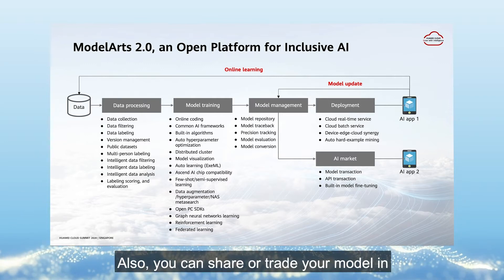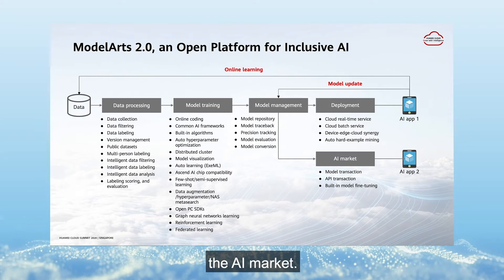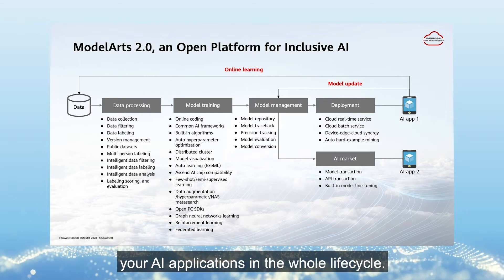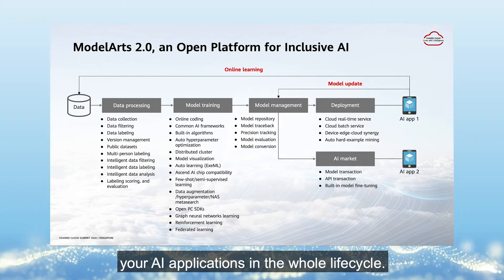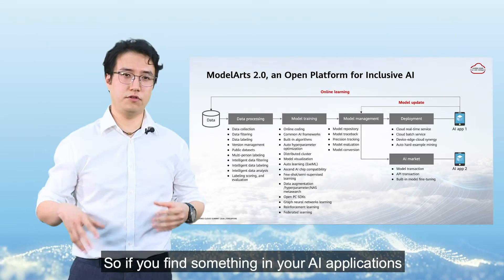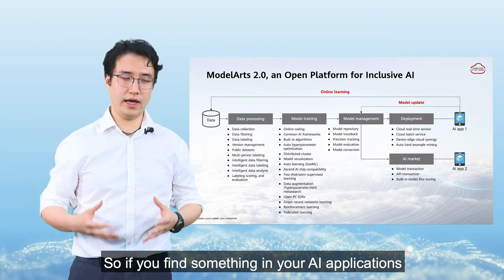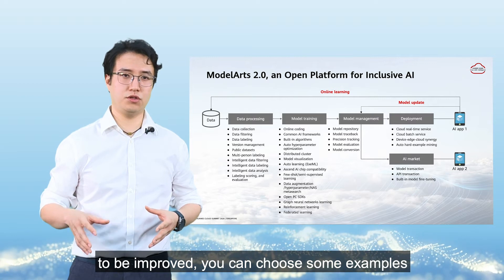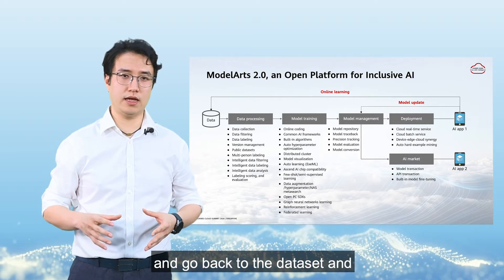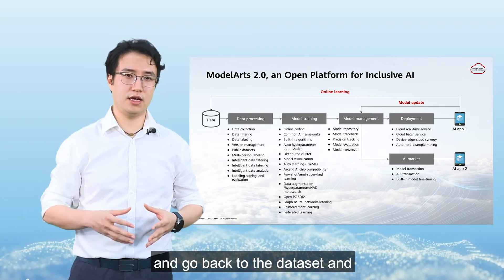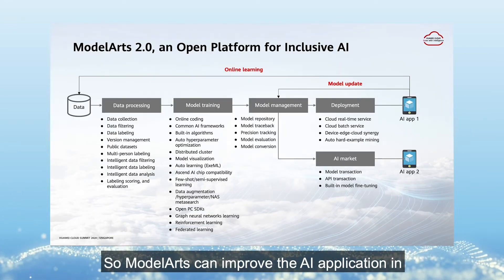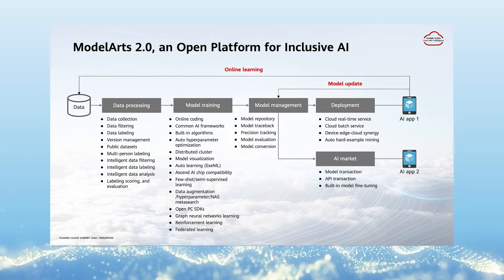You can also share or trade your model in the AI market. Model Arts provides features to improve your AI applications throughout the whole life cycle. If you find something to be improved, you can select some examples, go back to the dataset, and retrain the model.